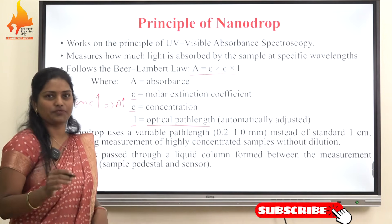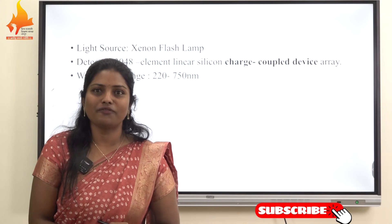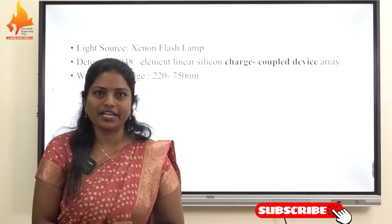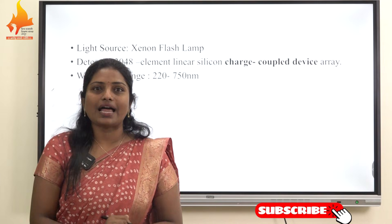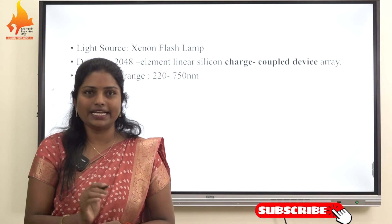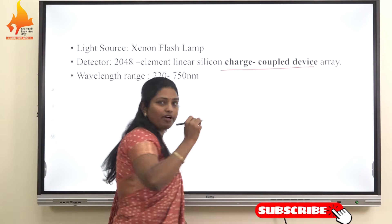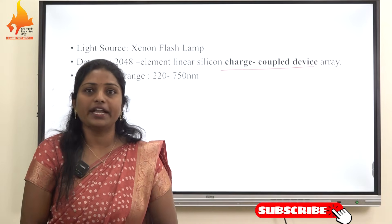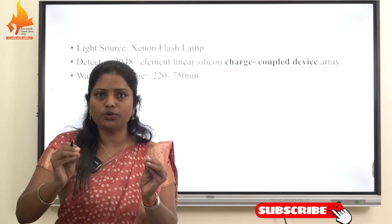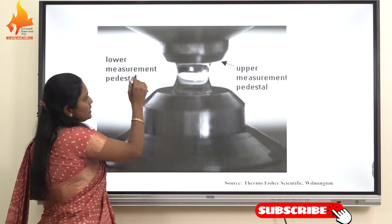The nanodrop instrument uses a pulsed xenon flash lamp as a light source, which emits high-intensity light across the UV-visible range in a single flash. The transmitted light is detected by a 2048-element linear CCD — charged-coupled device — array detector, enabling rapid full-spectrum analysis from 220 to 750 nanometers.